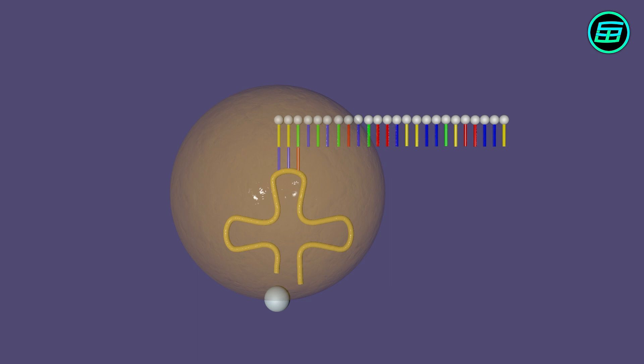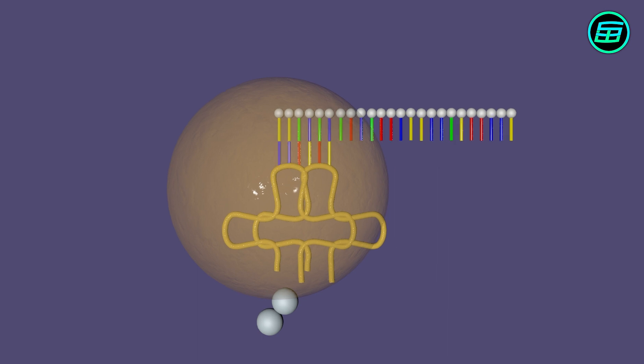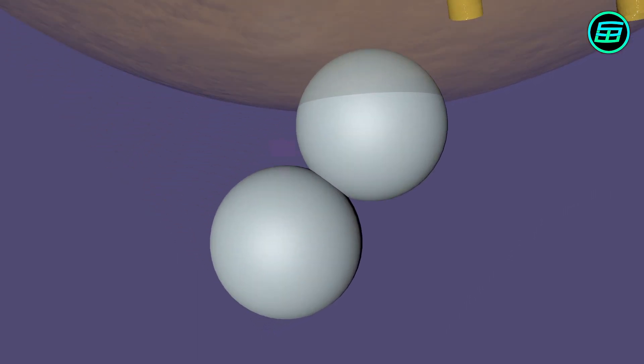After the first connection, the next codon is bound by a tRNA molecule with a complementary anticodon and delivers the correct amino acid to the ribosome. The ribosome uses enzymes to bind the amino acids together.